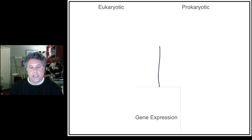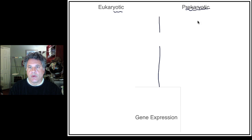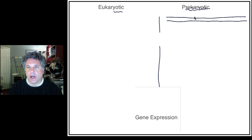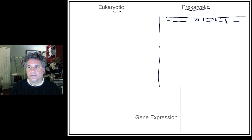We're going to compare gene expression in prokaryotes and eukaryotes by way of review. Starting with prokaryotic gene expression, here we have a stretch of prokaryotic DNA that we define as an operon. An operon in prokaryotes is a cluster of genes — gene 1, gene 2, and gene 3 — that are coordinately transcribed.